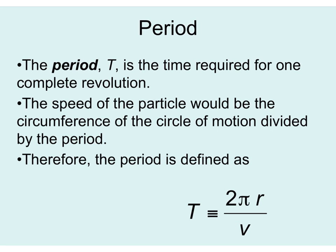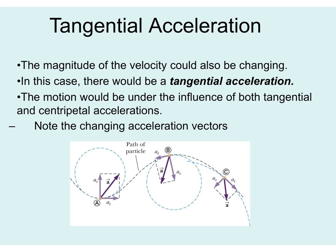When dealing with centripetal acceleration, we are sometimes asked to calculate the period — the time required for one complete revolution around the circular path. The period is defined as 2π times the radius divided by velocity. In rotational motion, tangential acceleration measures how quickly tangential velocity changes. The motion of an object can be under the influence of both tangential and centripetal acceleration, and tangential acceleration always acts perpendicular to the centripetal acceleration of the rotating object.